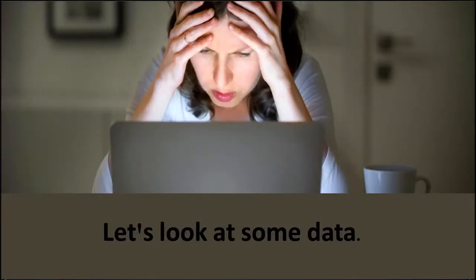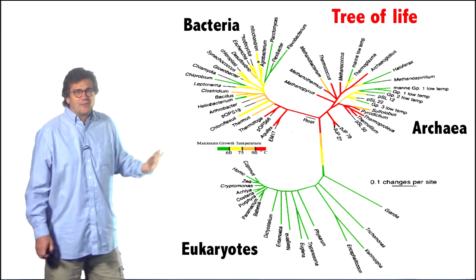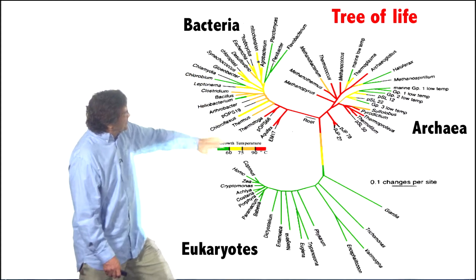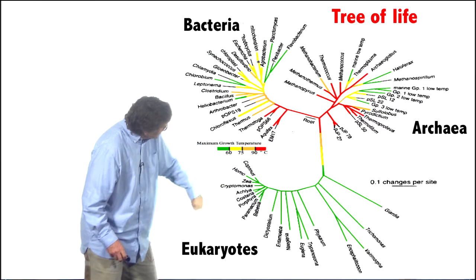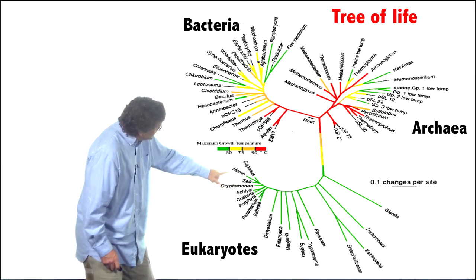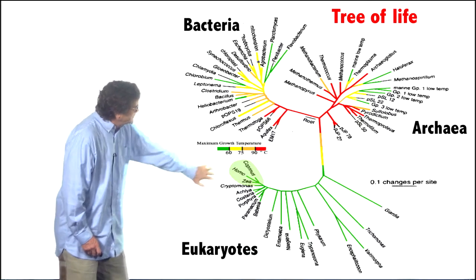Let's look at some data to try to sort this out. Here is a phylogenetic tree of all life. Bacteria, archaea, and the eukaryotes, our friends. Here are the fungi, the plants, and the animals. And this group are the multicellular things. Let's look more carefully here.